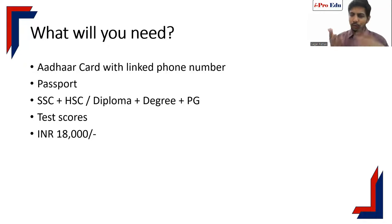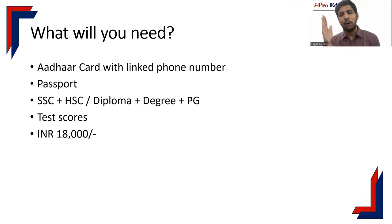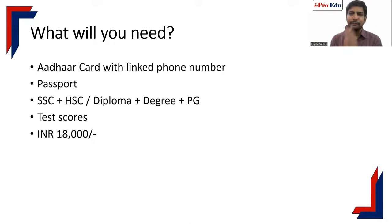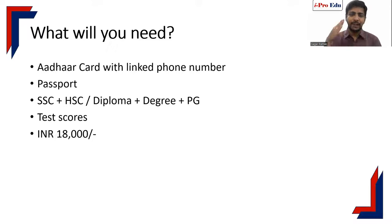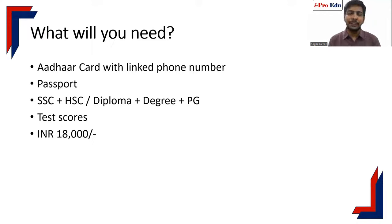Number two is your passport — if you already have it, there is no problem. Number three is your list of all documents from SSC onwards. All documents should be with you while filling the form. You do not need soft copies and do not have to upload anything. We will need to send hard copy photocopies via courier — SSC, HSC, diploma/polytechnic certificate, degree certificate, and master's certificate if applicable. You will need the year of passing and percentage.